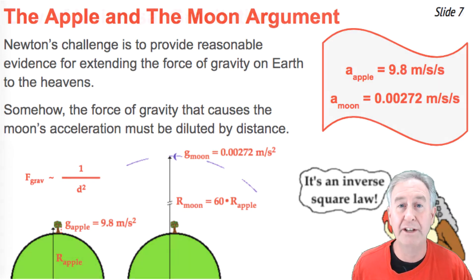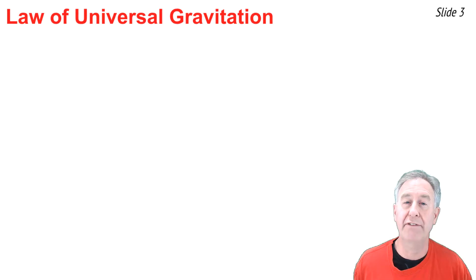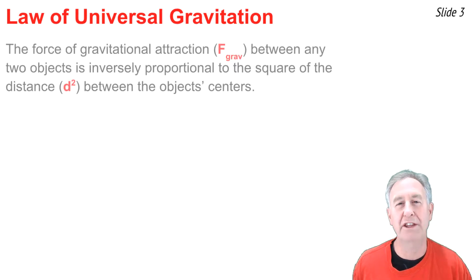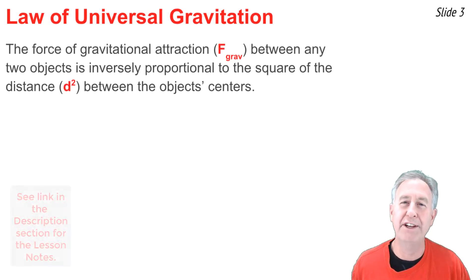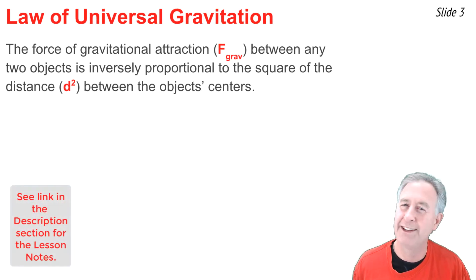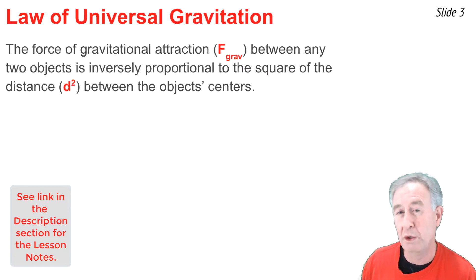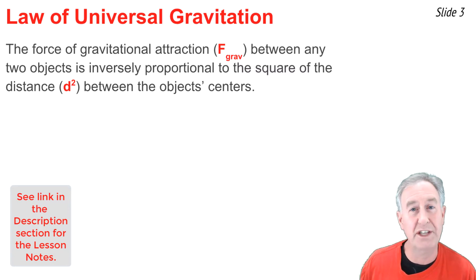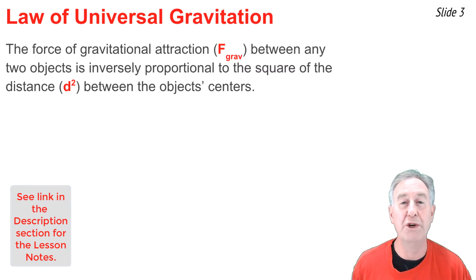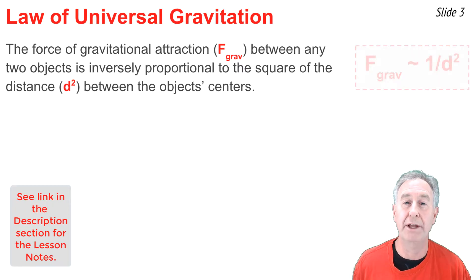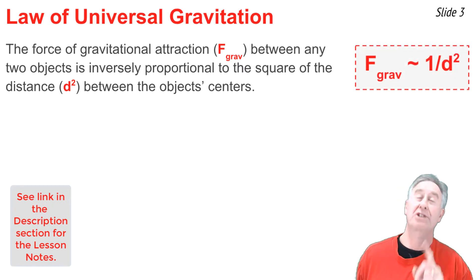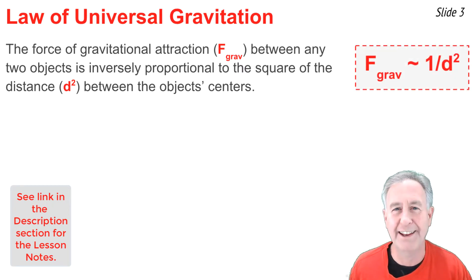When applied to the force of gravity, we could say that the force of gravitational attraction between any two objects is inversely proportional to the square of the distance that separates them. As a proportionality statement, it would look something like that.